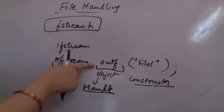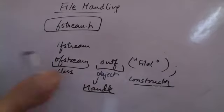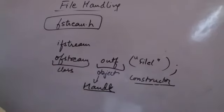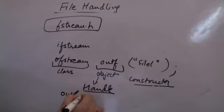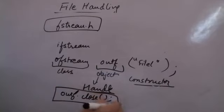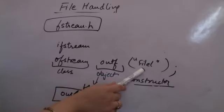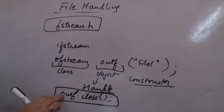To open file1, you use the constructor of ofstream. To close file1, you use the handle and call the function close: outf.close(). If the file is not in the same working directory, you need to give the entire path. Opening is fetching the file and opening it; closing is putting it back. The handle is then free and can be used to open another file.